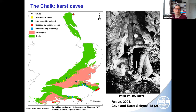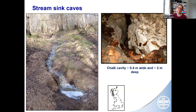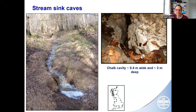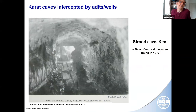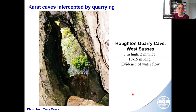Chalk caves are short — most are only a few tens of metres at most, and most are dry fossil caves. There are a few with water flow, particularly some caves exposed beneath stream sinks. At most stream sinks in the chalk, the water sinks through sediment, but occasionally the chalk is exposed below the stream sinks and we see quite big cavities — big for the chalk anyway. There are also some karst caves intercepted by adits or wells — this is a cave in Kent with a classic karstic keyhole-shaped cave passage. Some caves have been intercepted by quarrying, and there were solution features on the wall providing evidence of past water flow.